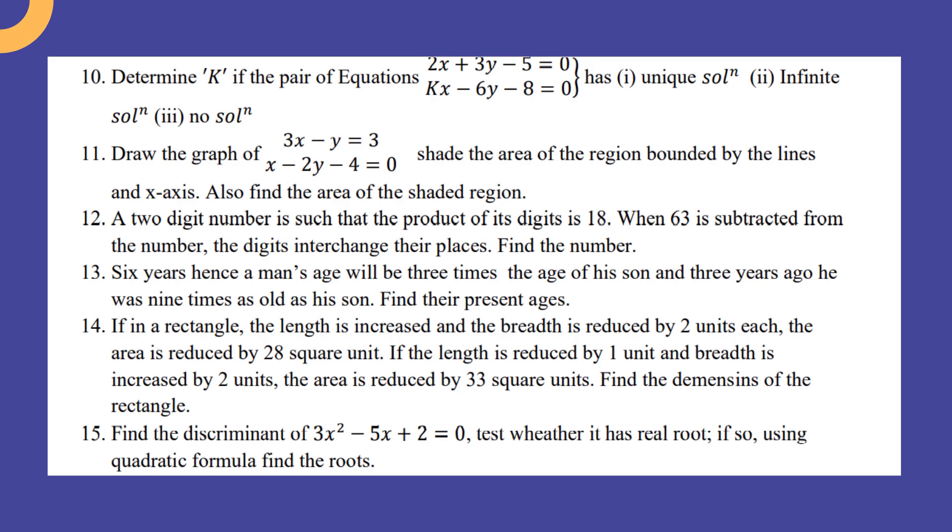Determine k if the pair of equations 2x + 3y - 5 = 0 and kx - 6y - 8 = 0 has unique solution or infinite solution or no solution. Then draw the graph of 3x - y = 3 and x - 2y - 4 = 0. Shade the area of the region bounded by the lines and x-axis. Also find the area of the shaded region.